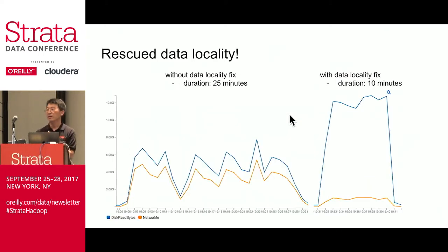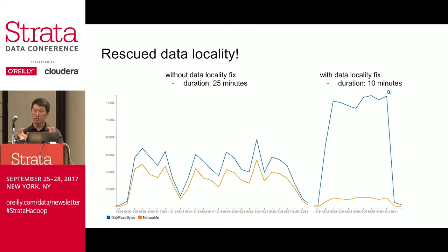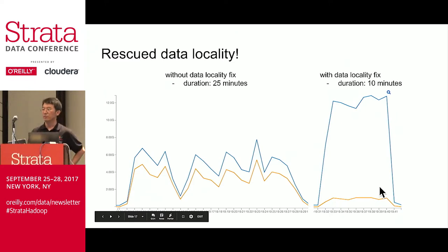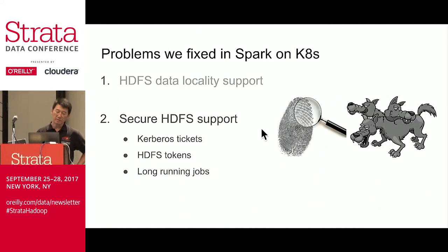So we fixed data locality — does it make a difference? We ran the same Spark job twice: first without the data locality fix, second time with it. The job was TeraValidate, which reads the output of TeraSort and checks if all records are properly sorted. Both runs used the same 500 gigabytes of data. The result is very clear: the second run finished much earlier — 10 minutes versus 25 minutes. It got faster because it increased local disk reads significantly while avoiding slow network I/O. This is clearly thanks to the data locality fix.